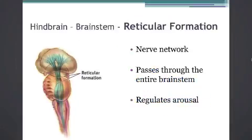Finally, we have the reticular formation. This is a nerve network that runs through the entire length of the brainstem, and it is about keeping us alert. It regulates our arousal, allowing us to both sense and deal with the information coming at us from our world.